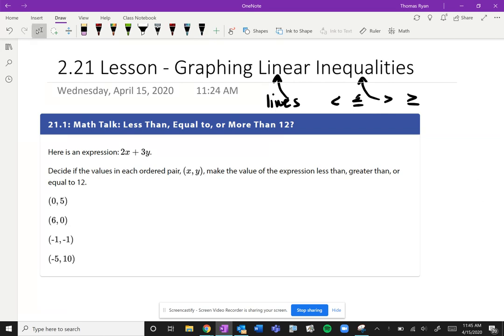Okay, so let's start with our warm-up, 21.1. We want to think about less than, equal to, or more than 12. Here's our expression: 2x + 3y. How are we going to know whether that's bigger than, less than, or the same as 12? Well, we probably need to find something to plug in for x and for y. Decide if the values in each ordered pair make the value of the expression less than, greater than, or equal to 12.